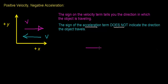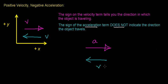As an example, suppose you have an acceleration vector that points in the positive direction — in this case, the positive x direction. This does not indicate the direction in which this object's traveling. As an example, this object could have a velocity vector that points in the opposite direction, and it's the velocity vector that tells you the direction in which this object's traveling. When the acceleration vector and the velocity vector point in opposite directions, it means that the object is going to slow down.